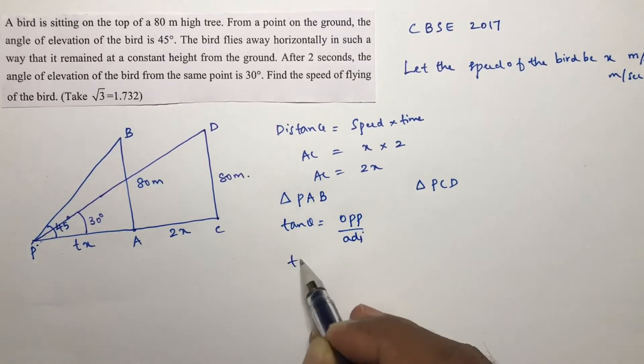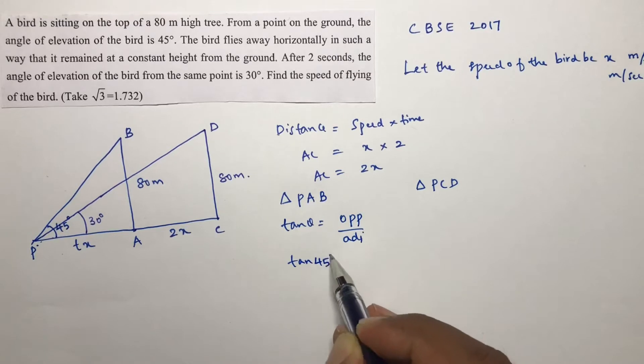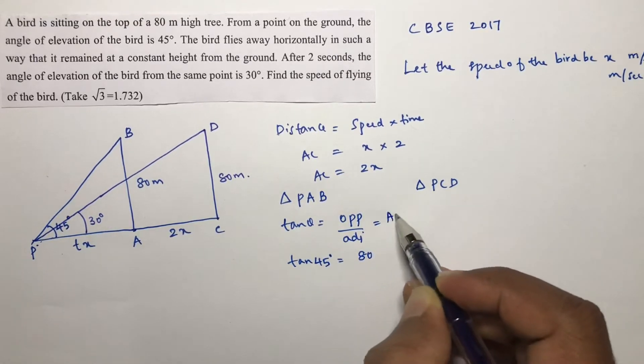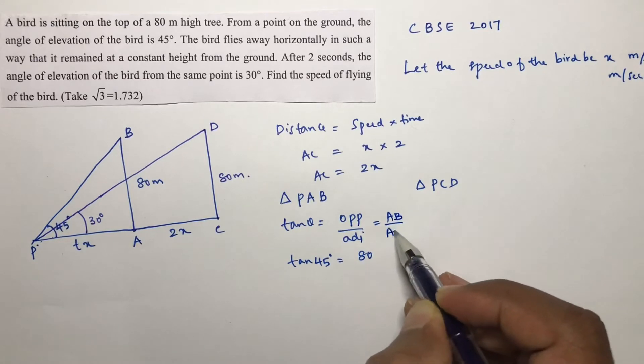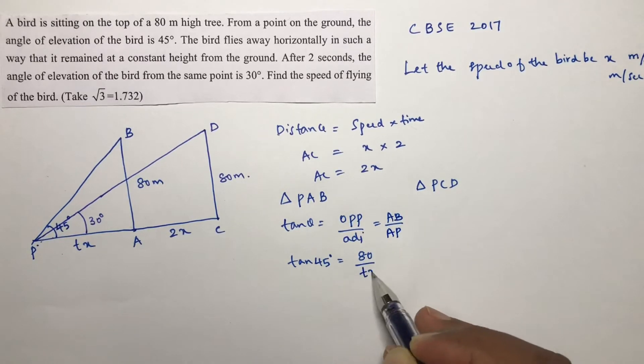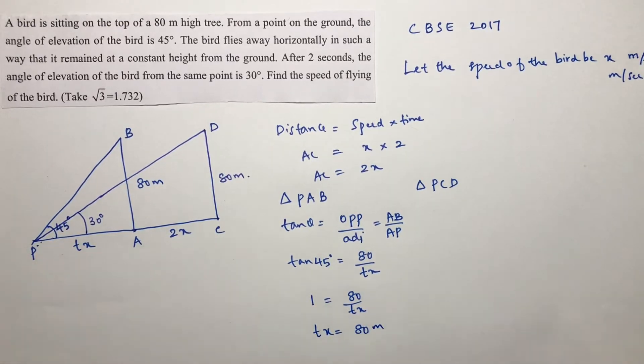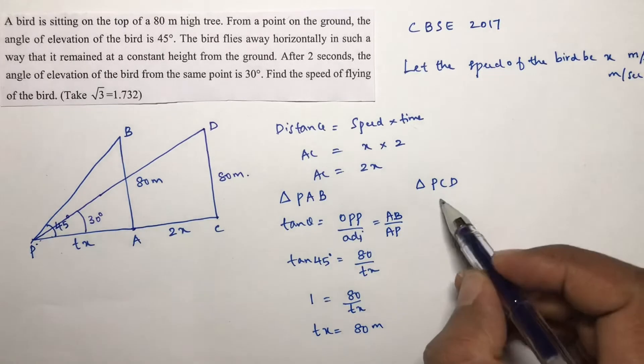The other one is triangle PCD. In PAB, tan theta ratio opposite by adjacent. Tan 45 degrees, opposite is 80 meters, adjacent is AP. Tan 45 value is 1, so 1 equals 80 by tx, therefore tx equals 80 meters.